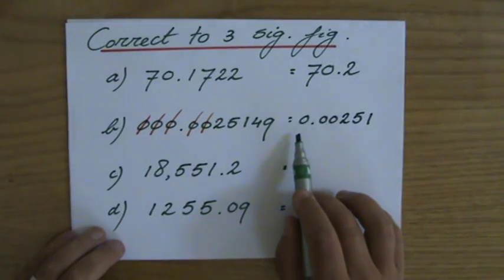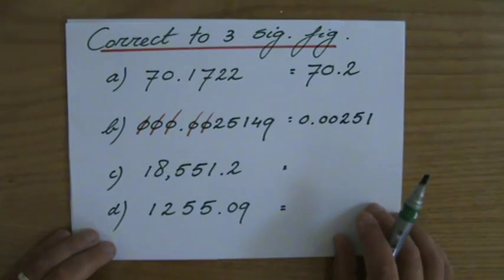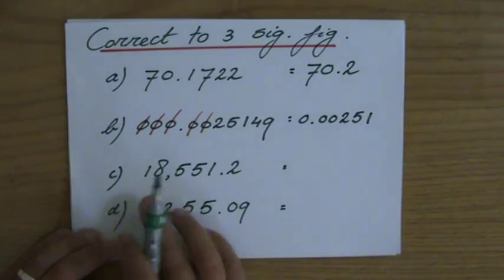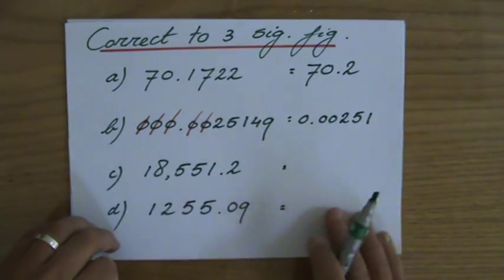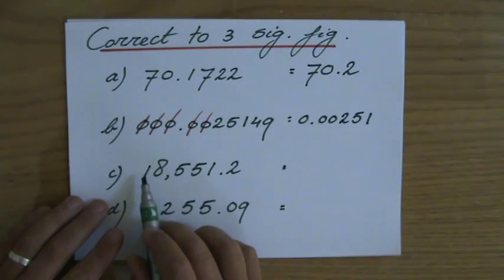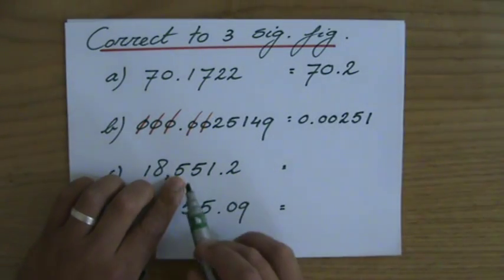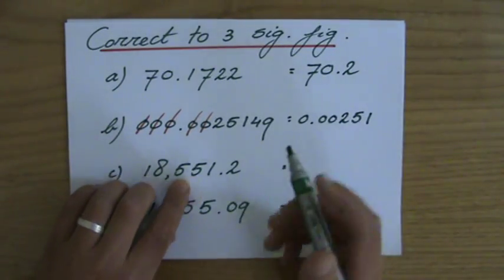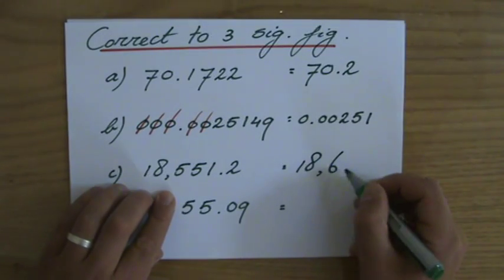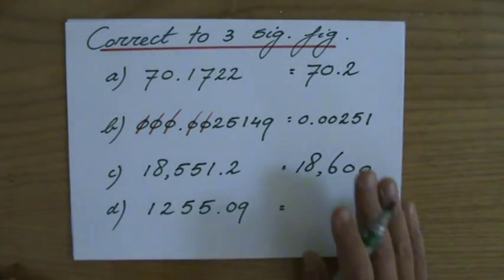This is correct to three significant figures because those zeros at the beginning do not count as significant figures. Next one: 18,551.2. Three significant figures: one, two, that's the third. The five stays a five or goes up to a six, that depends on the next one. It's a five or higher, so it does go up to a six. 18,600.